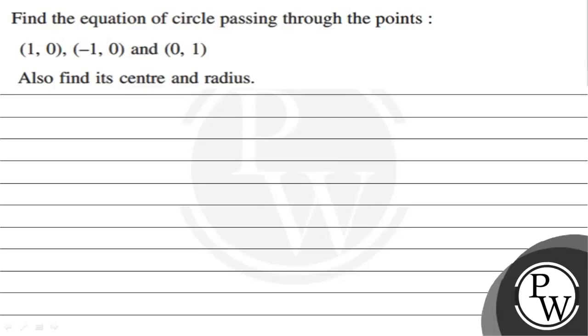Hello! Let's read the given question. The question states: find the equation of the circle passing through points (1,0), (-1,0), and (0,1).